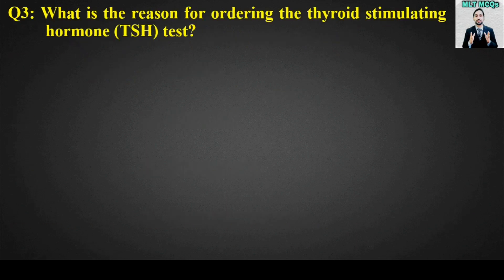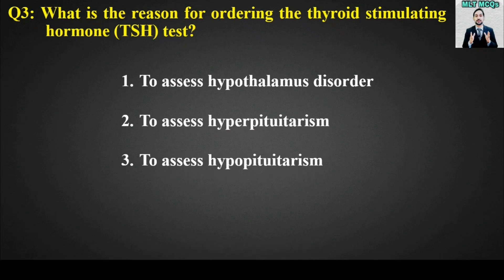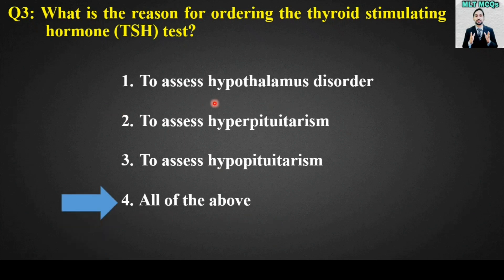MCQ number 3: What is the reason for ordering the thyroid stimulating hormone TSH test? Options are: to assess hypothalamus disorder, to assess hyperpituitarism, to assess hypopituitarism, or all of the above. The right answer is option number 4, all of the above. The TSH test is ordered for all these purposes.